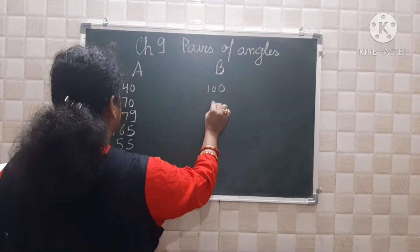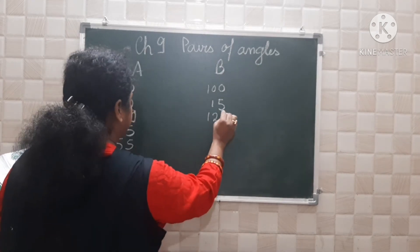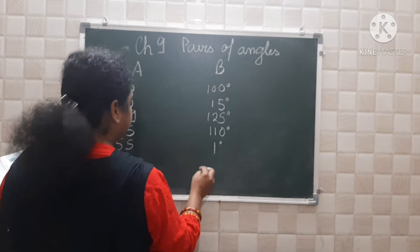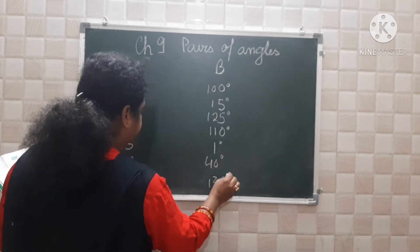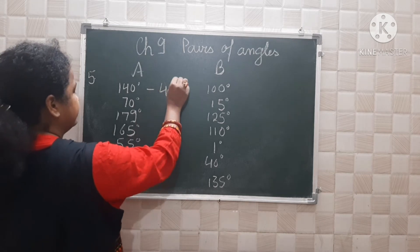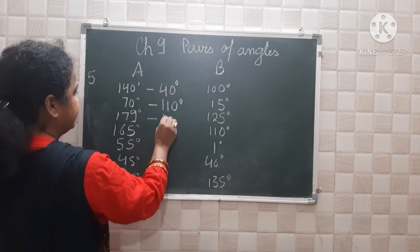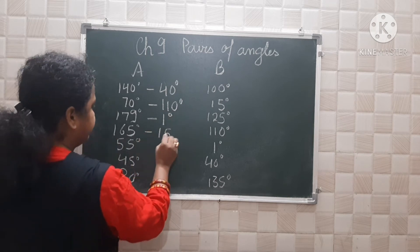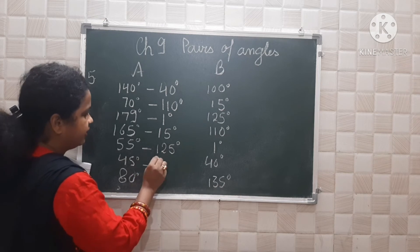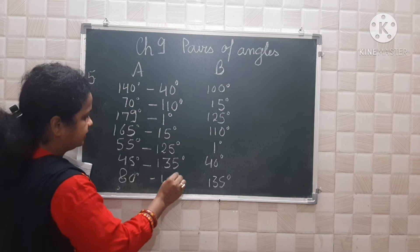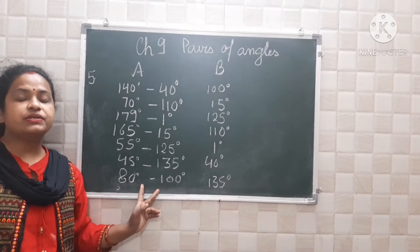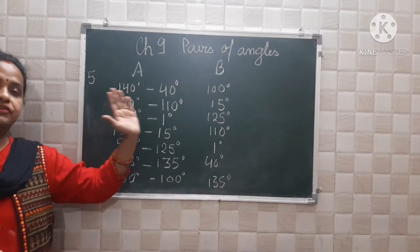Group B has: 100, 15, 125, 110, 10, 100, 140, and 135 degrees. Now see here — what you add to 140 to make 180 is 40 degrees. 70 pairs with 110. 179 pairs with 1 degree. 165 pairs with 15 degrees. 55 pairs with 125 degrees. 45 pairs with 135 degrees. 80 pairs with 100 degrees. The sum of each pair is always equal to 180 degrees — so these are supplements of each other.